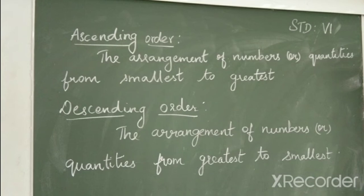Now, coming to descending order, the arrangement of numbers or quantities from greatest to smallest is your descending order. Ascending order means arranging the numbers from smaller number to bigger number, and descending order means arranging the numbers from bigger number to the smaller number.